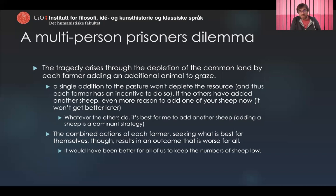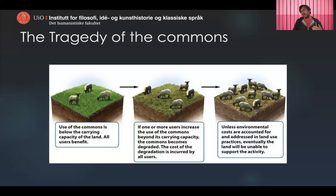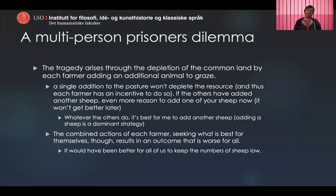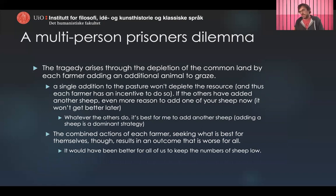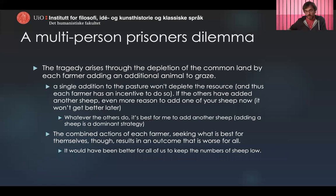The combined actions of each farmer seeking what's best for themselves produces an outcome that's worst for all. It would have been better to keep the numbers of sheep relatively low, but instead we end up in a situation where the land is so dried out and eaten up that no sheep can graze there anymore. This is a multi-person prisoner's dilemma situation — what's best collectively is not what's best for each individual. Each individual has reason to defect rather than cooperate and agree to limit their sheep.